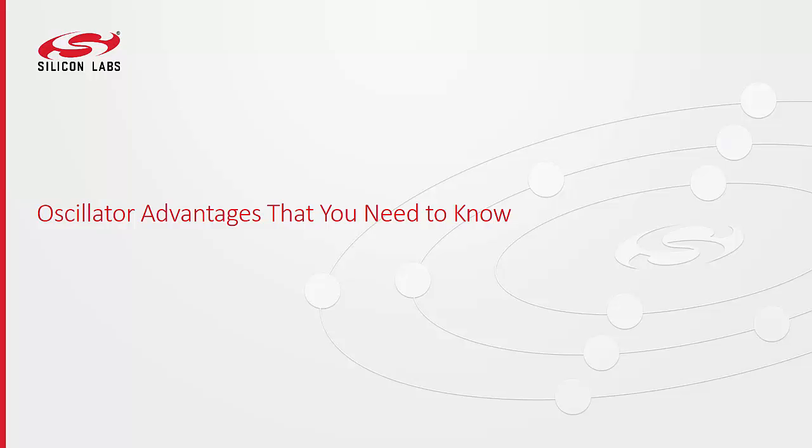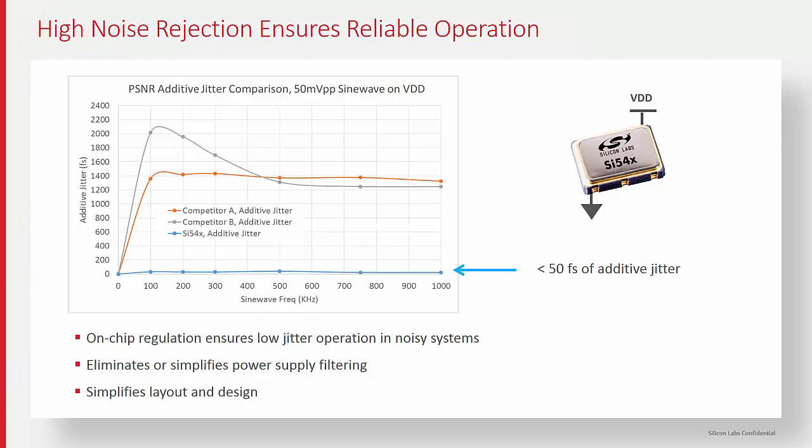Customers generally have rather electrically noisy boards. There are lots of high-frequency clocks running on dense PCB boards, traces close to one another, and they frequently use switch mode power supplies. If the power supply noise is not adequately filtered out on the board or on the oscillator, it shows up as increased jitter on the output.